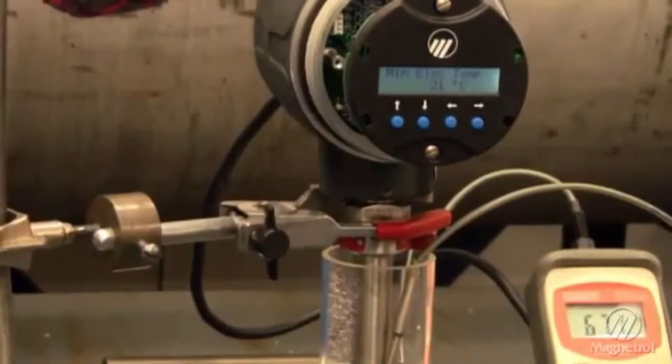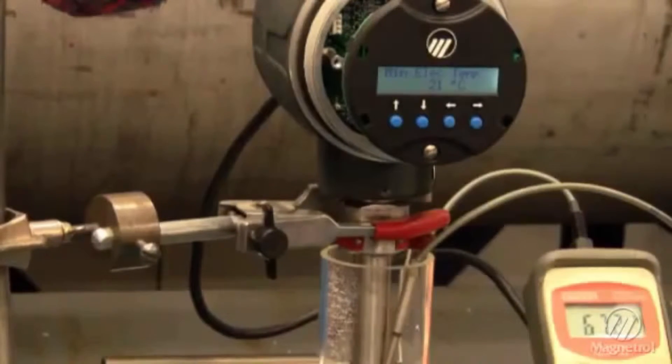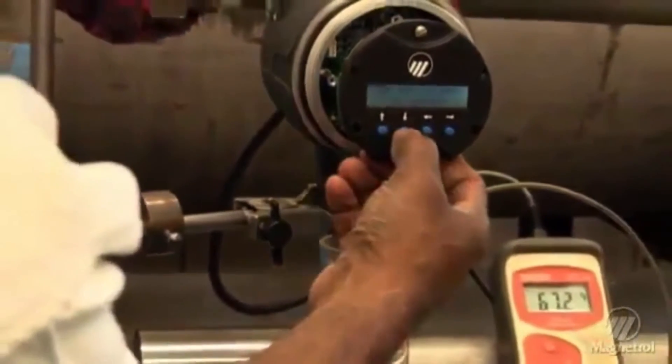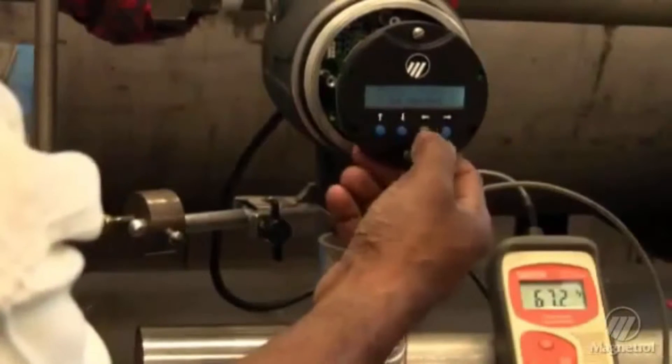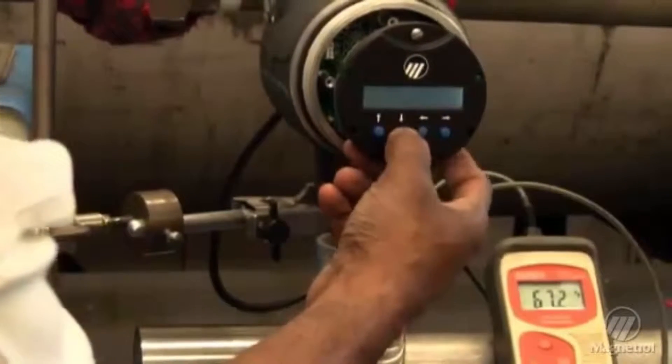This establishes baseline values that can be used for comparison at a later date. These baseline values are stored in the TA2 as well as located in the calibration certificate that gets sent with every order.